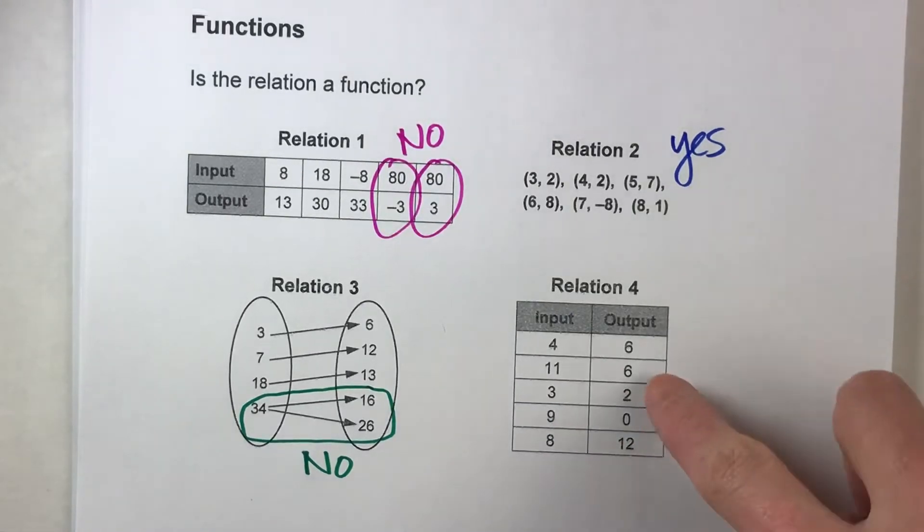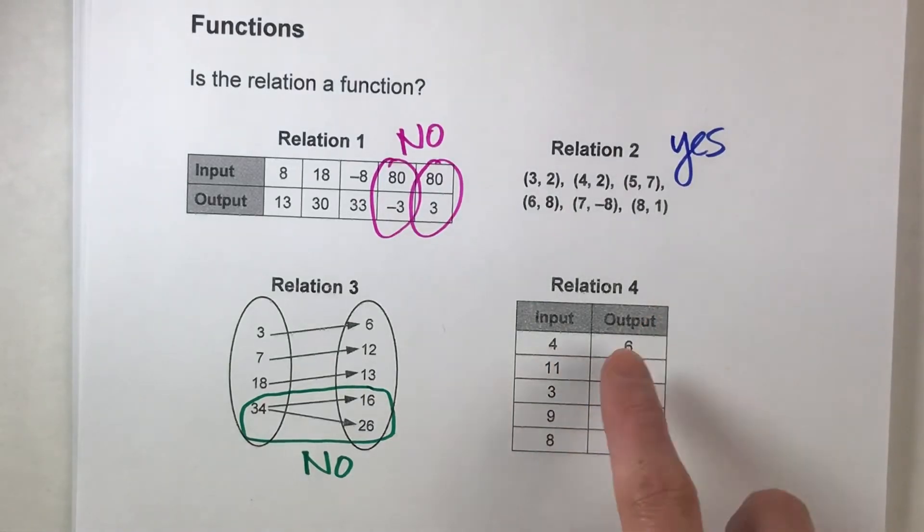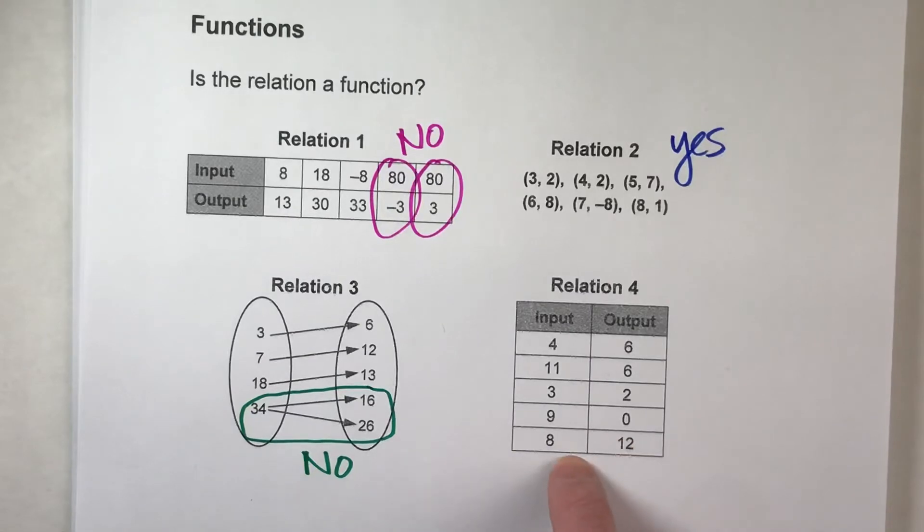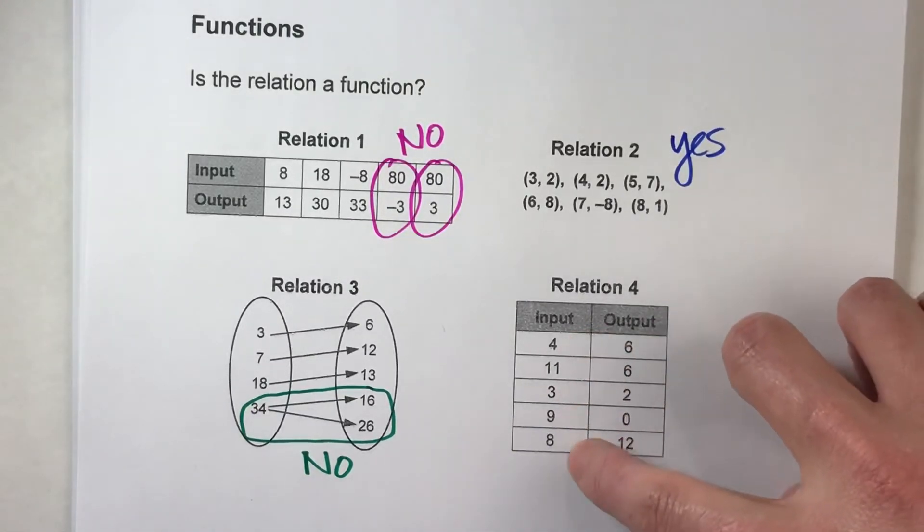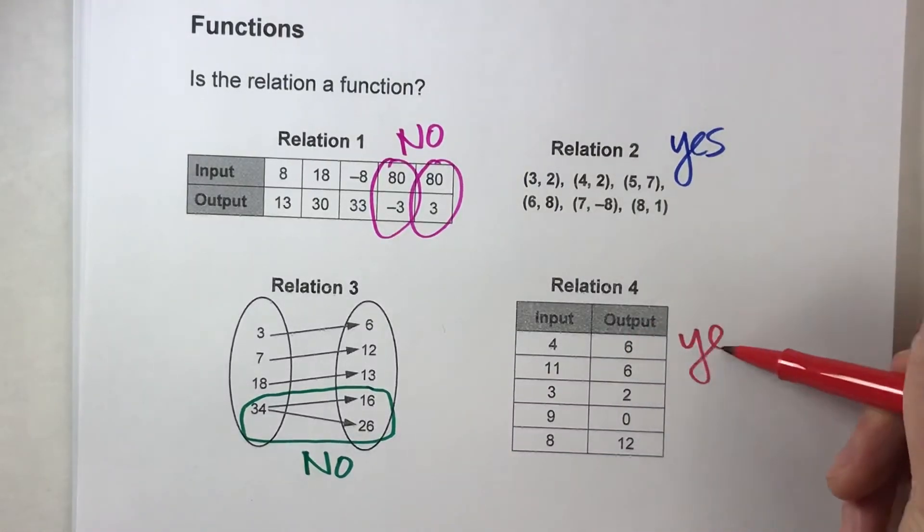Last one, table 4. Input of 4 gave us a 6. Input of 11 gave us a 6. Input of 3 gave us a 2. Input of 9 gave us a 0. And an input of 8 gave us a 12. Notice for every single one of these inputs there's only one output. So yes this is a function.